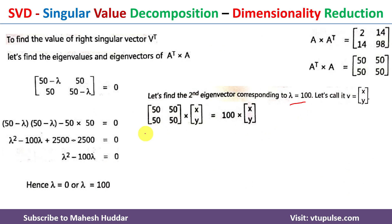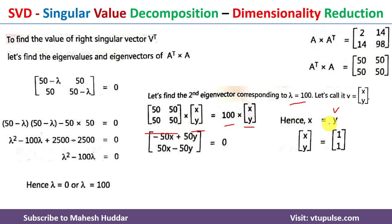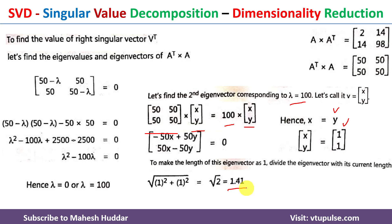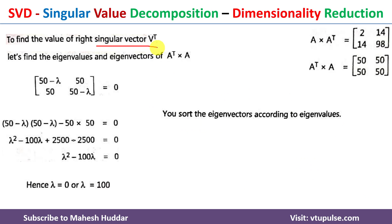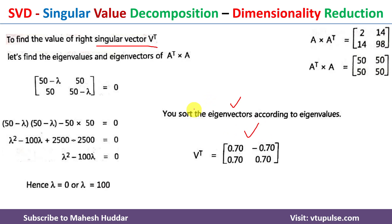For λ = 100, using Aᵀ×A · v = 100v and simplifying: −50x + 50y = 0 and 50x − 50y = 0, giving x = y. If y = 1 then x = 1, so the eigenvector is [1, 1]. The length is √(1² + 1²) ≈ 1.41. Dividing gives the unit eigenvector [0.70, 0.70]. We arrange eigenvectors in descending eigenvalue order to construct V transpose.